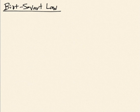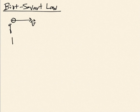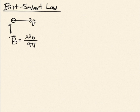We'll start with an expression for the magnetic field due to a single moving charge. If I imagine a single point charge with value Q moving at velocity V, the magnetic field created by that object can be written as B = μ₀/4π × QV × R̂ / R². Here μ₀ is a constant called the permeability of free space, present simply to ensure correct SI units in Tesla.